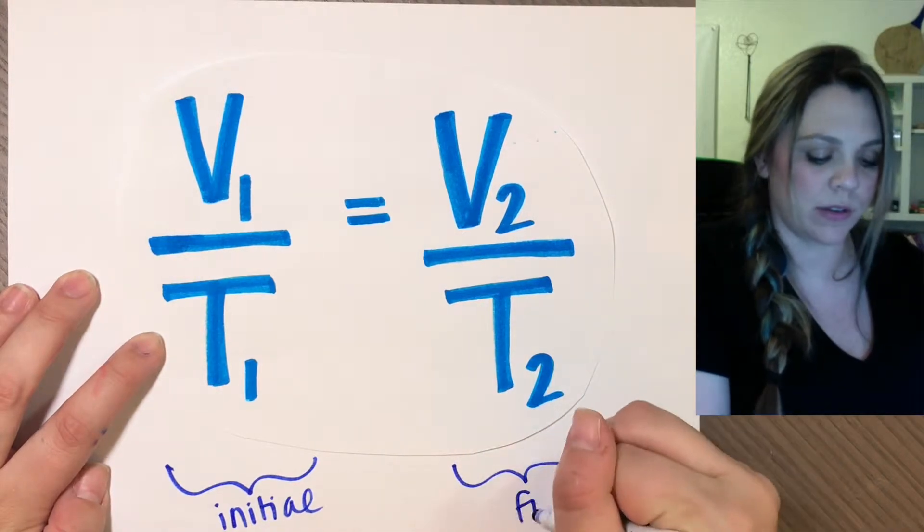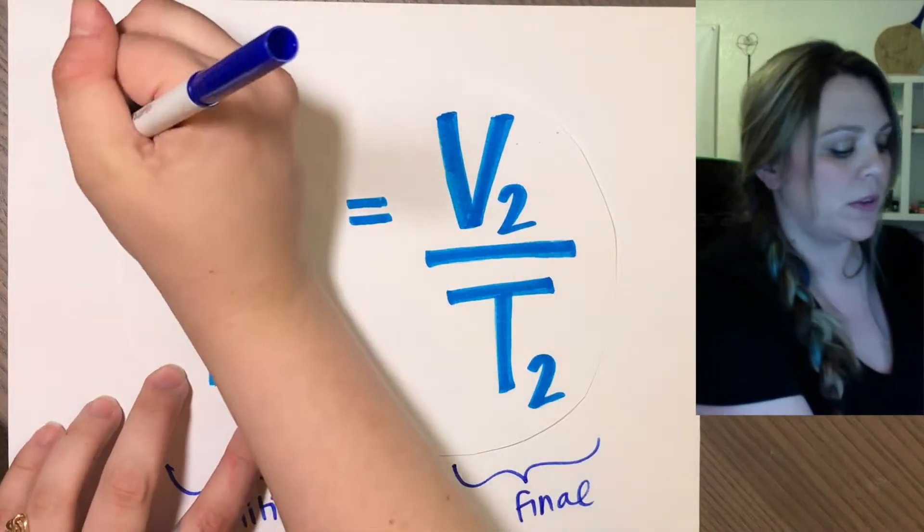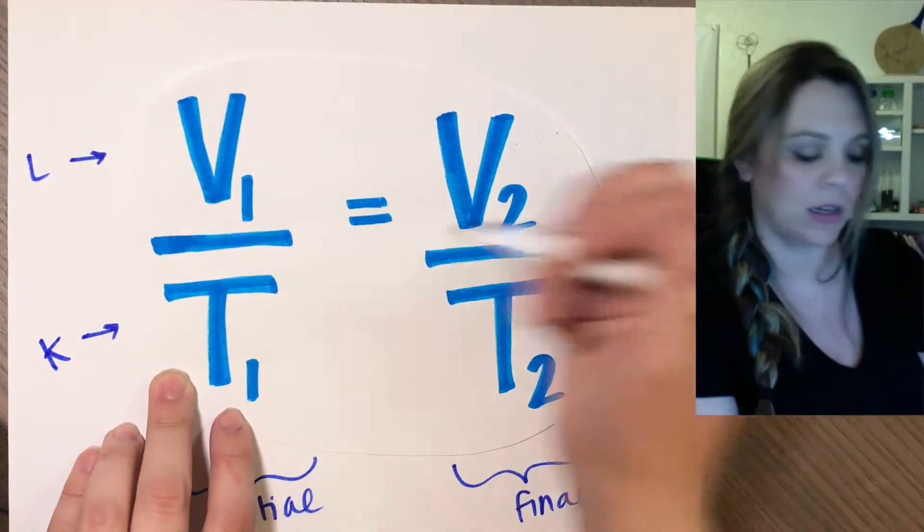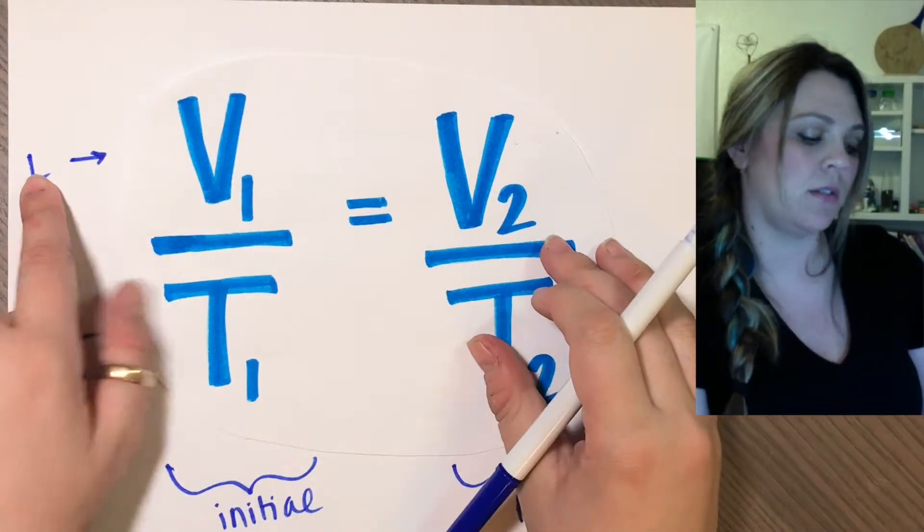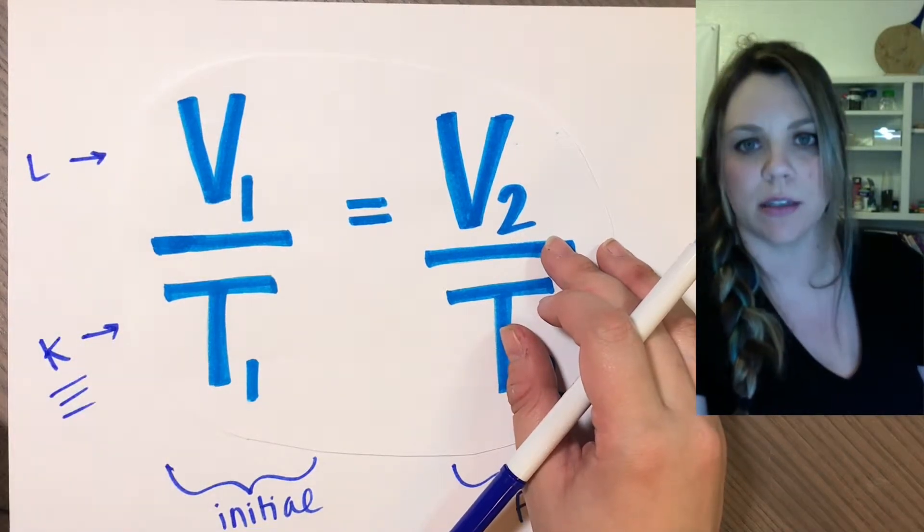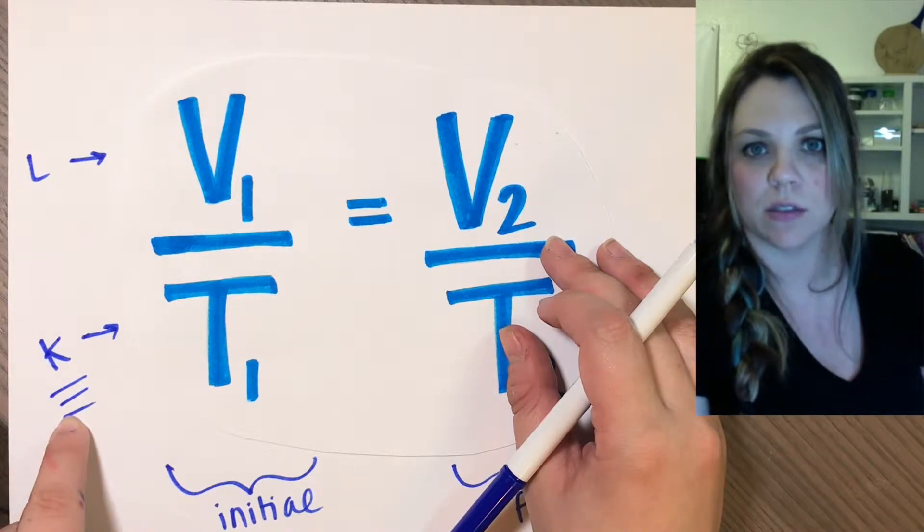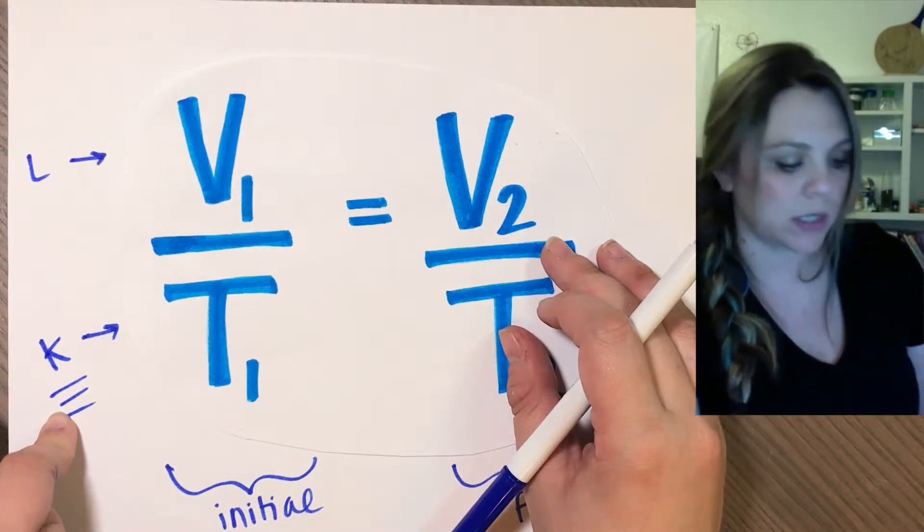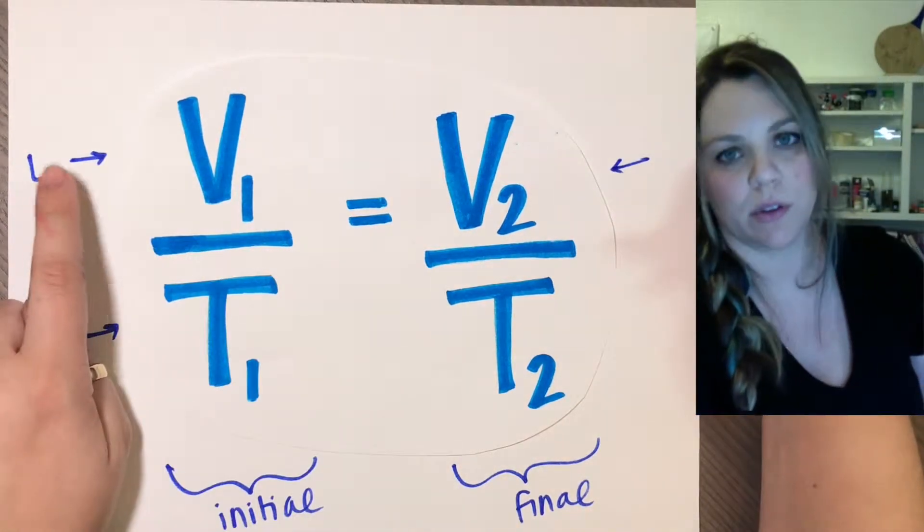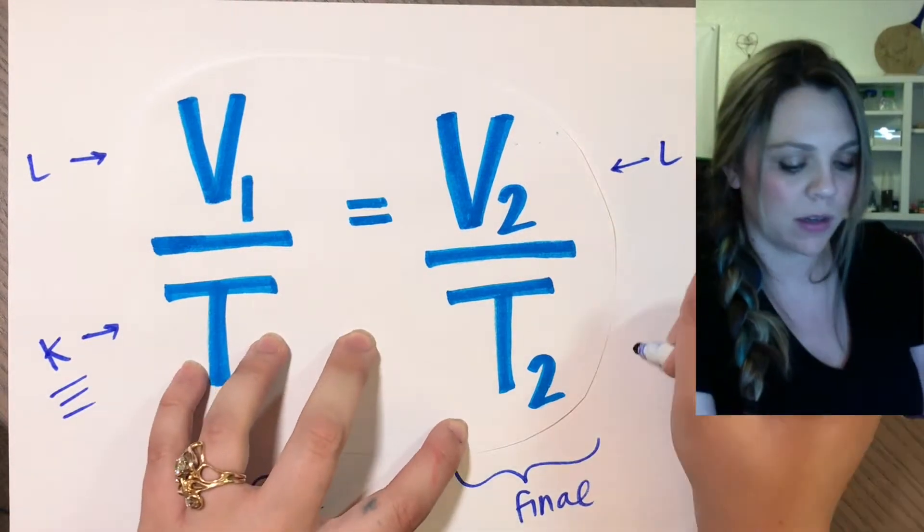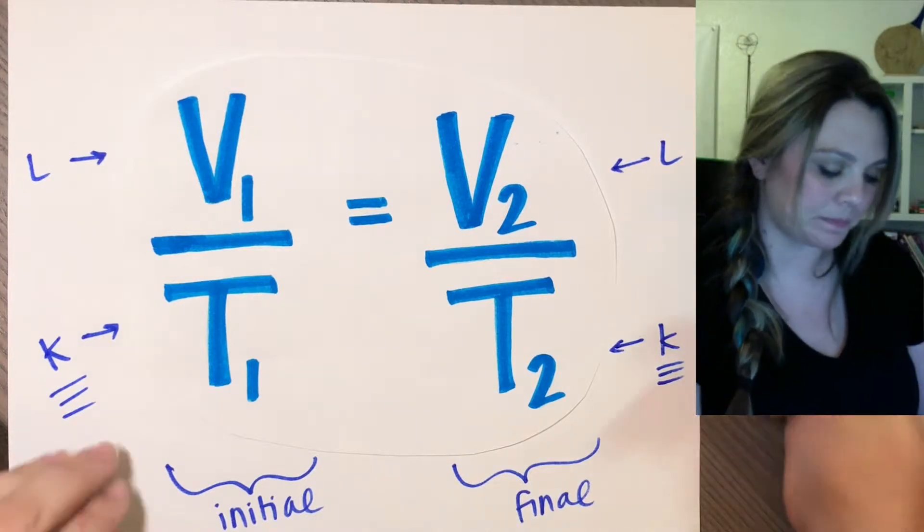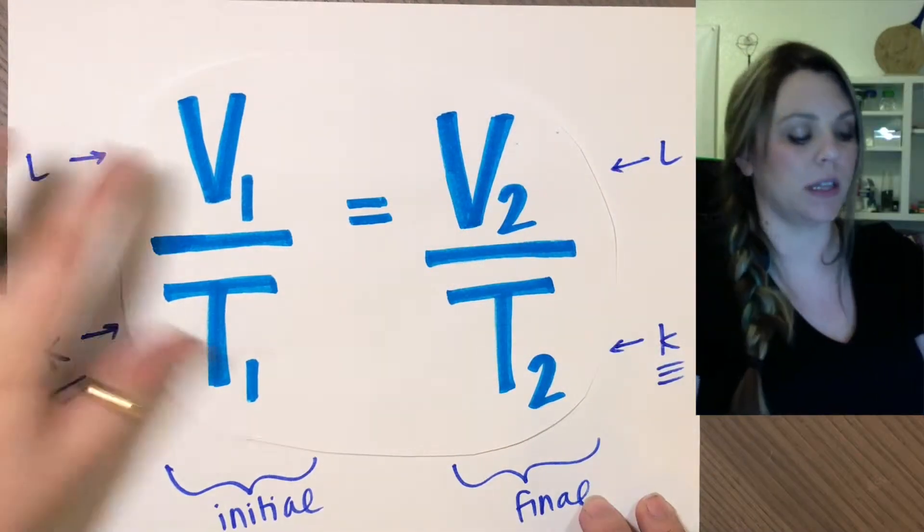This is your initial condition, this is your final. Volume you're going to have in liters, temperature has to be in kelvin, a million percent. You can use a variant of liter like milliliter, but you cannot forget to switch from Celsius to kelvin - ridiculously important. Whatever unit of volume you start with, you better end with that same unit, and again temperature has to be in kelvin, there's no exception.